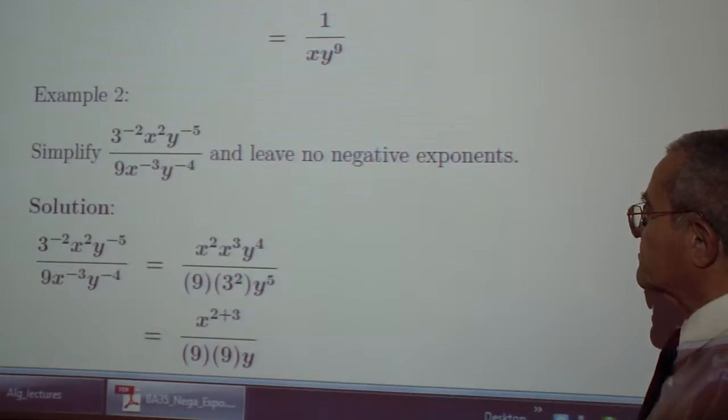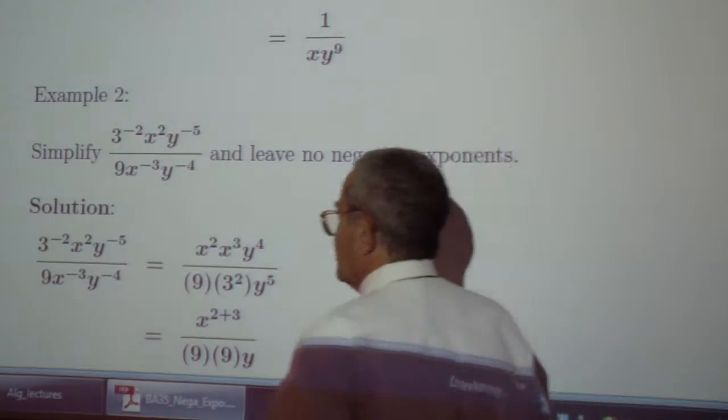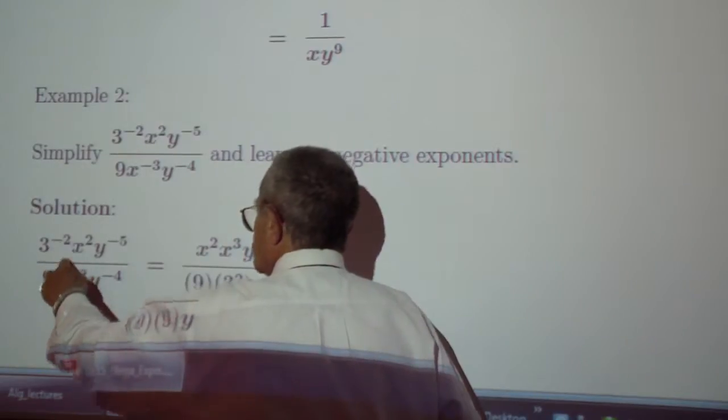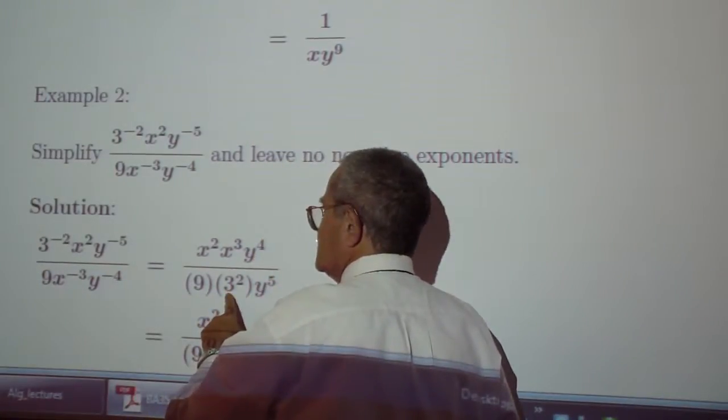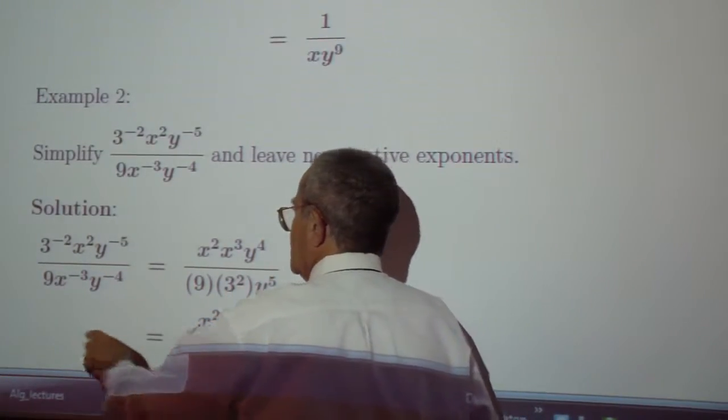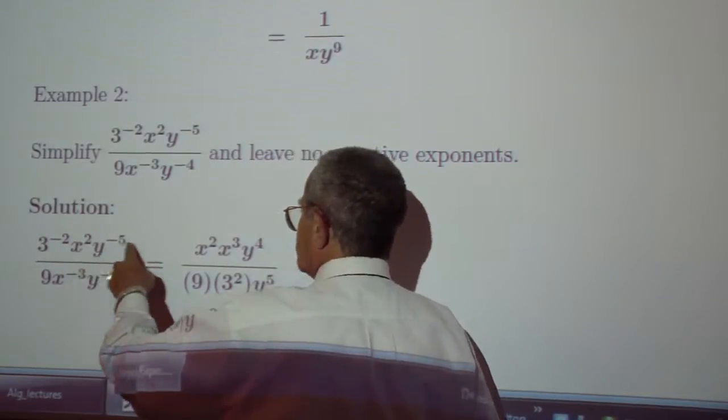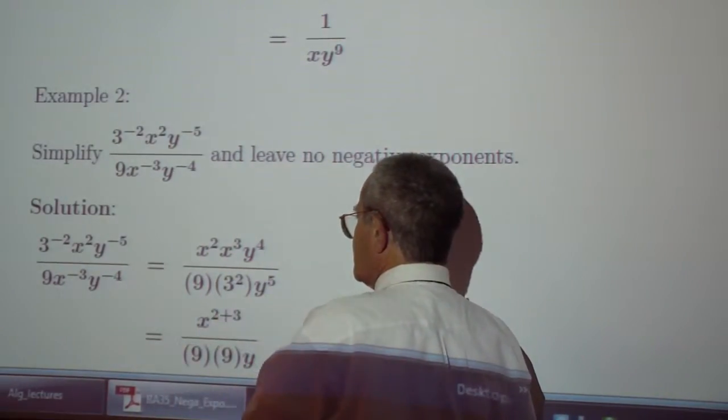Example 2. We have 3 to the negative 2 which in the denominator becomes 3 to the positive 2. We have x to the negative 3 which becomes x to the positive 3 in the numerator.